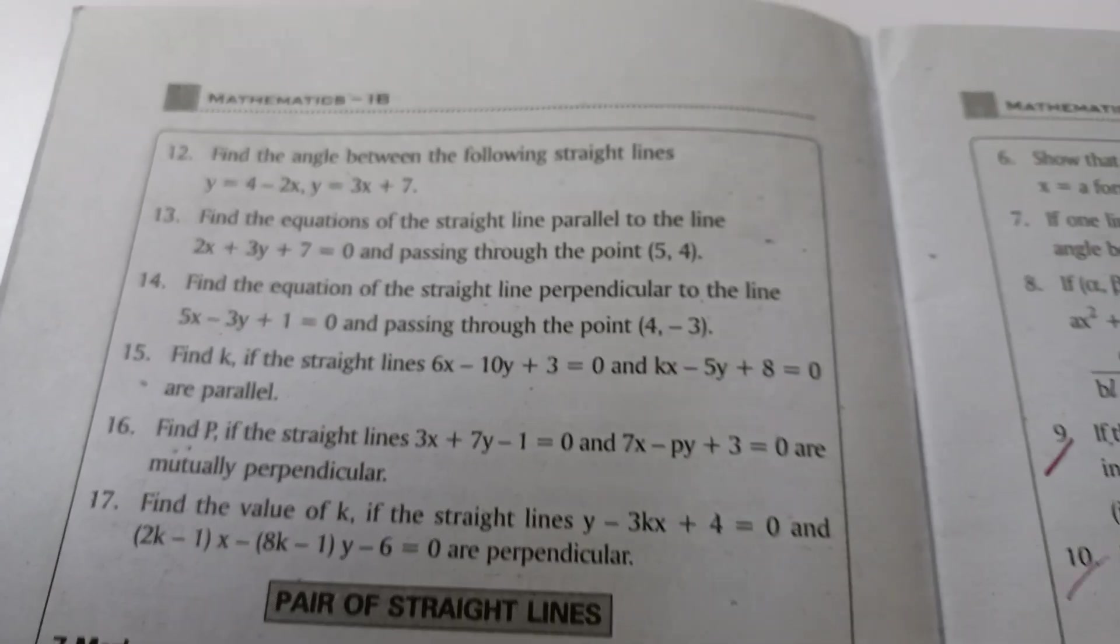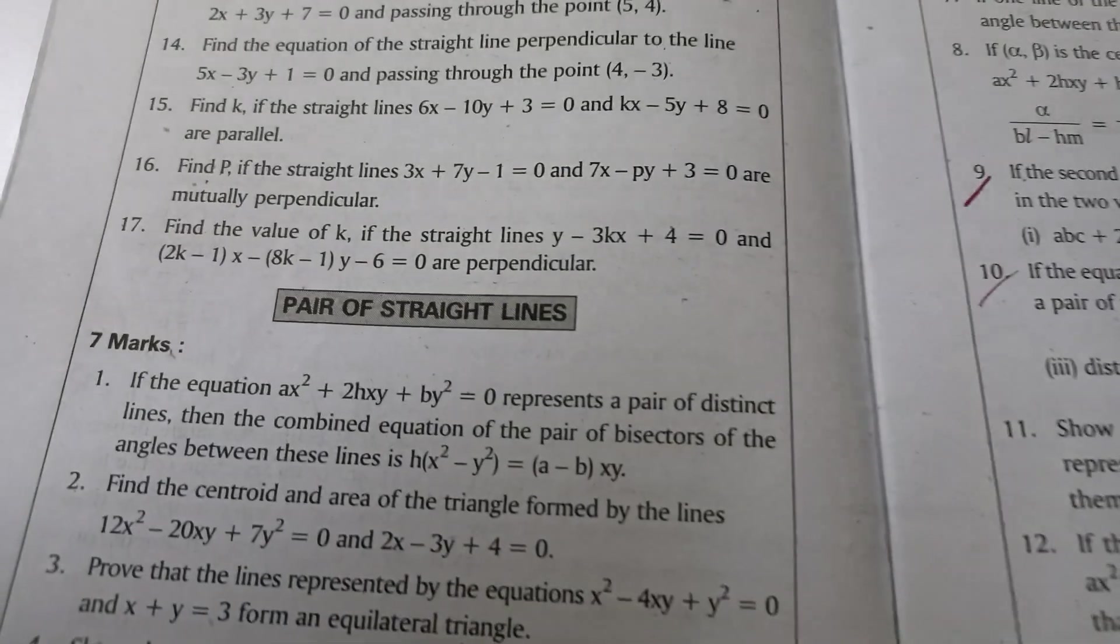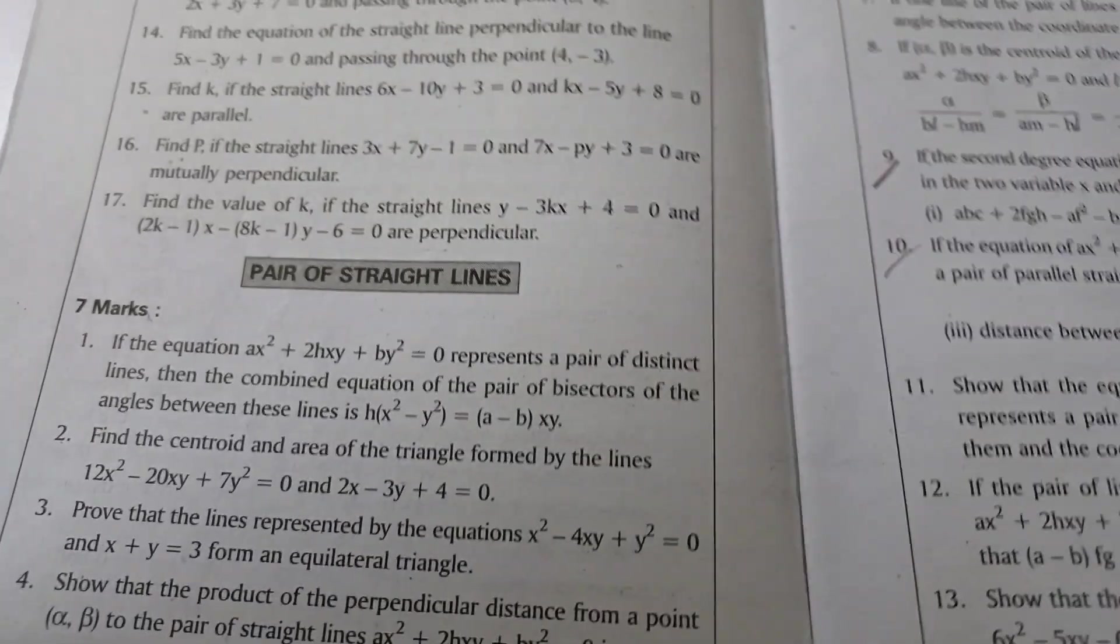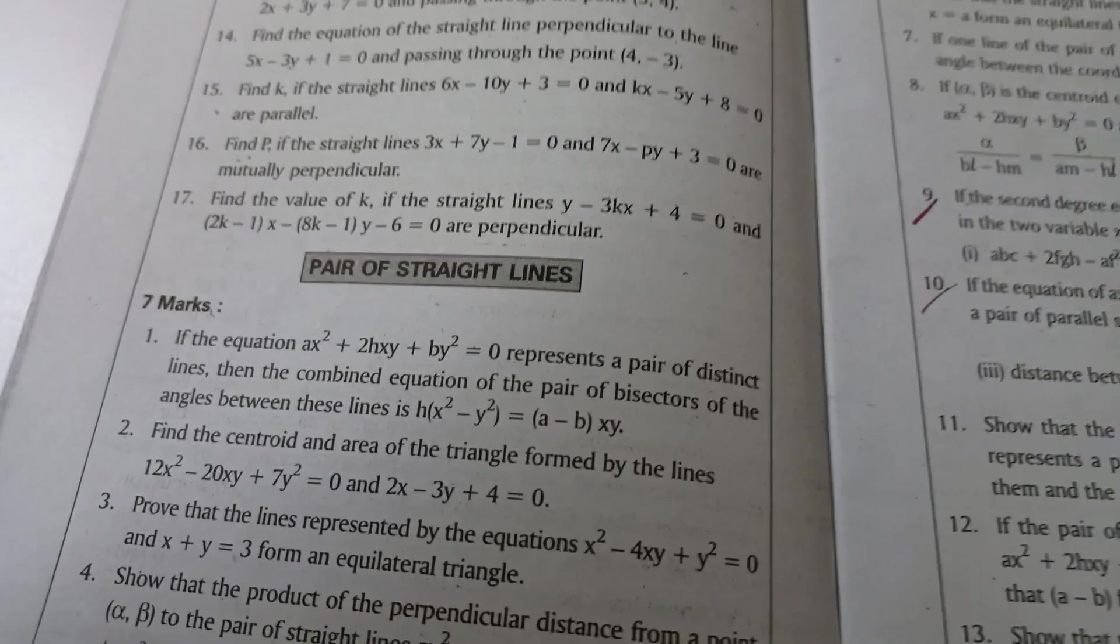These are two more questions, it's completed. Straight lines, now going to pair of straight lines. Yes, seven marks, you know pair of straight lines, two sevens, right? One seven is theorem and another seven is homogeneous.